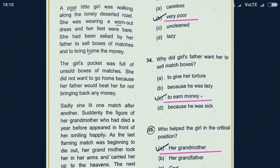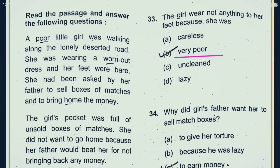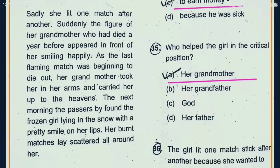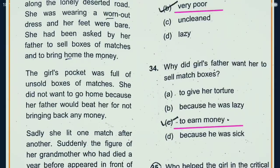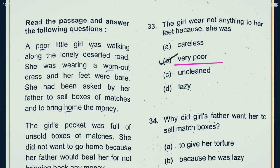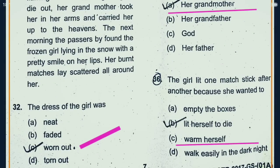Question 32: There is a passage. Out of this passage, there are several questions. Let's read the questions. The dress of the girl was worn out. A poor little girl was walking along the lonely desert road. She was wearing a worn-out dress. Here is the right answer.